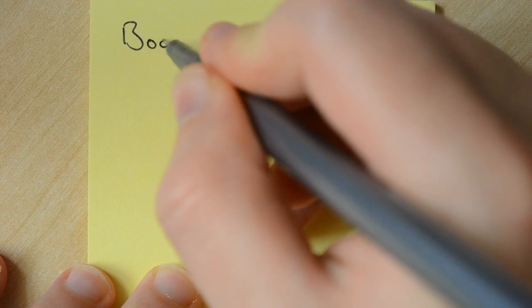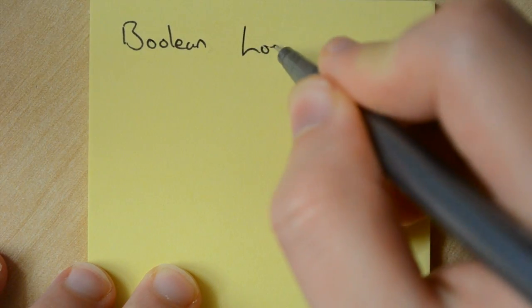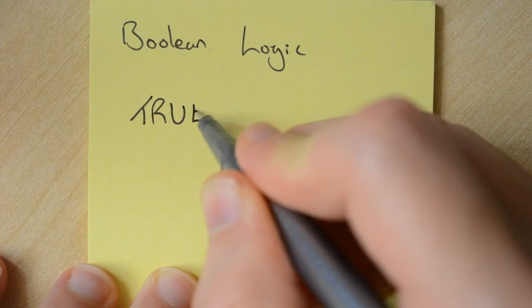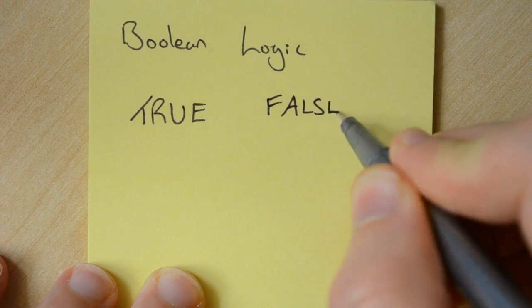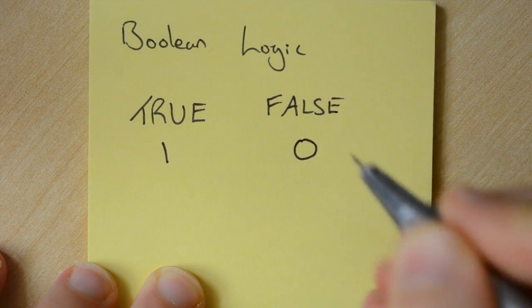The chips used to control this system utilize something known as boolean logic. There are two values in boolean logic, true or false. In binary this could also be one or zero.